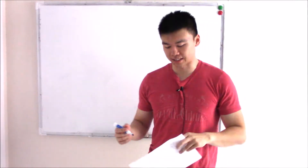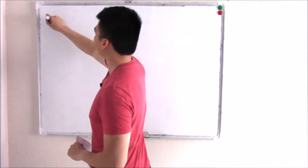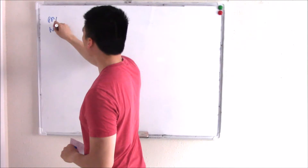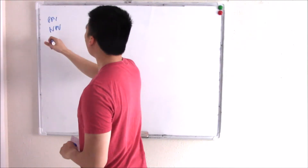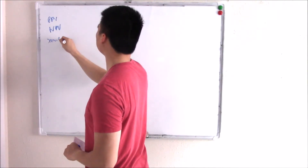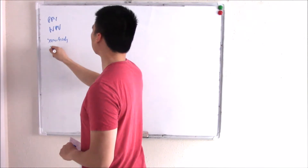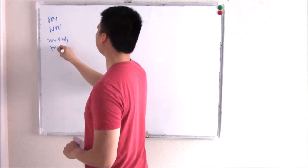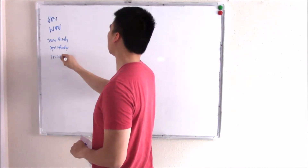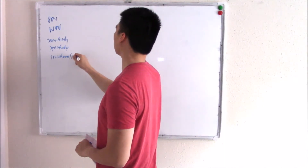Let's continue our talk on biostats. In this video, we're going to talk about positive predictive value, negative predictive value, sensitivity, and specificity. Then we're going to close things off with a talk on incidence and prevalence.